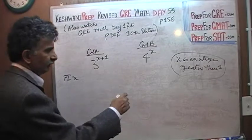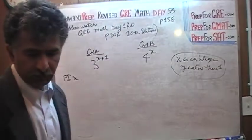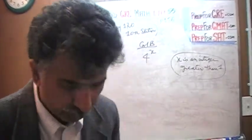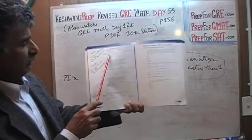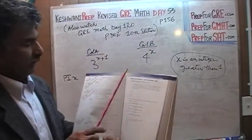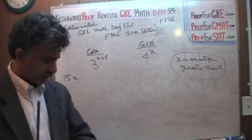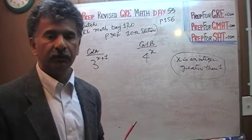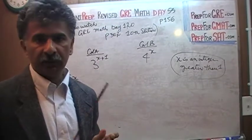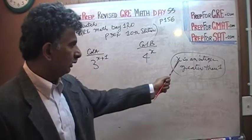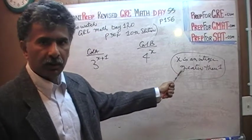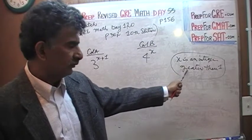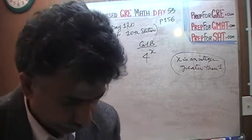Since we are told something important in this question, let me pick up the book and show it to you. Between the two columns — Column A and Column B — on the very top there is a statement you must always pay attention to, because it pertains to the whole question. Here we are told that X is an integer greater than one, meaning X must be a whole number greater than one.